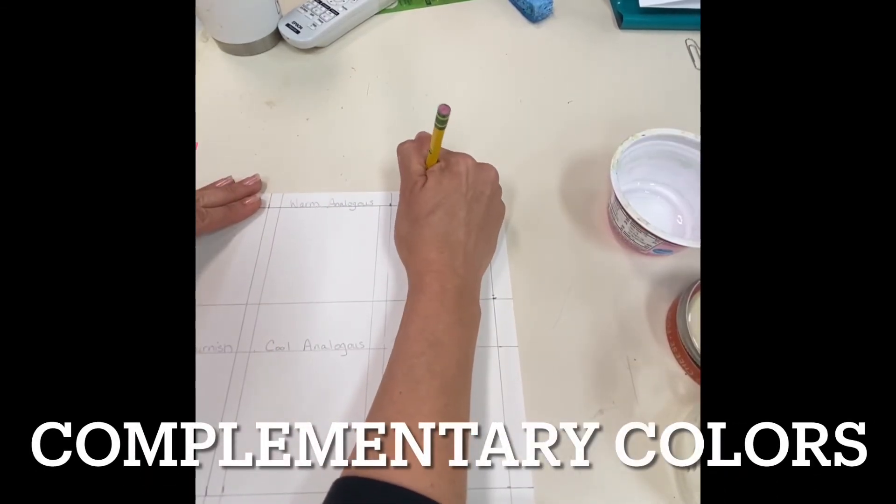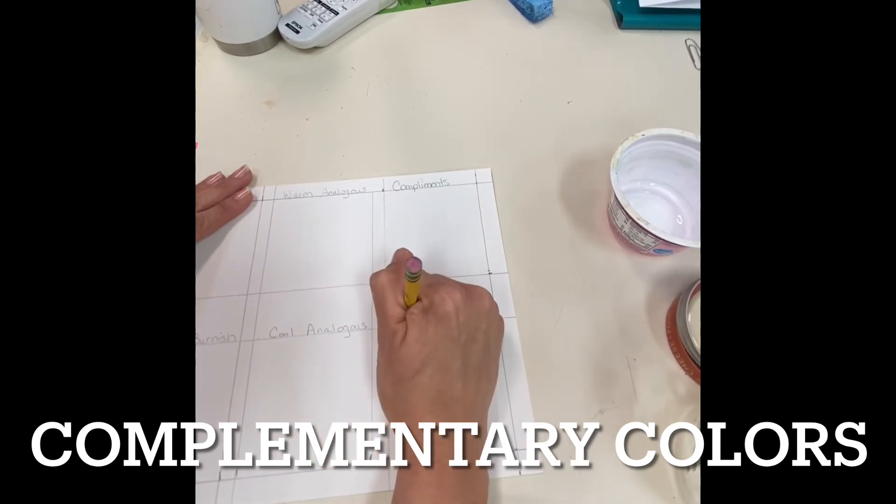In the last column of boxes we're going to practice using complementary colors, so you can write complementary on both the top and the bottom.